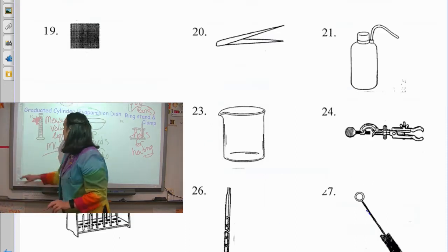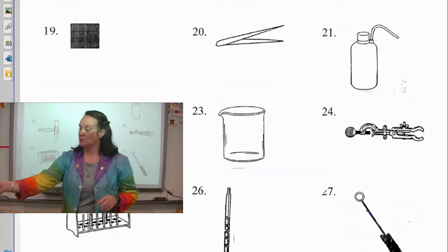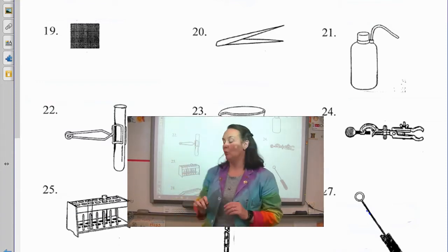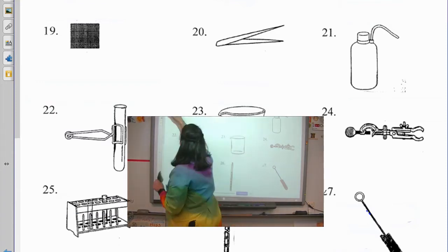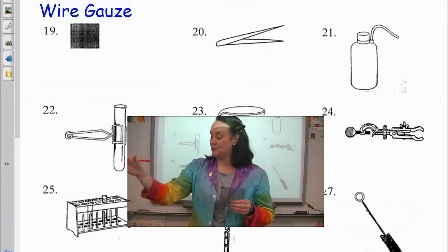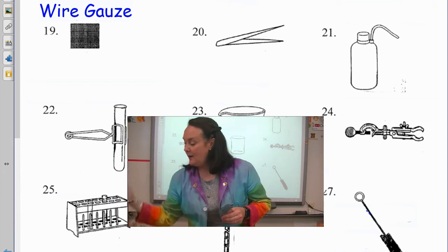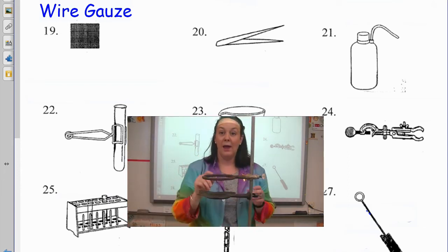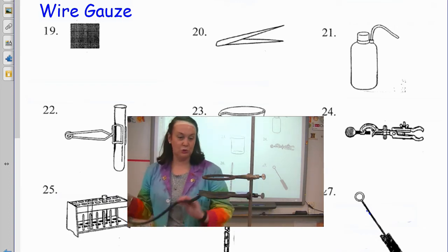All right, on to the back. Number 19 is what we were just talking about. Looks a little bit like this. It's actually called a wire gauze. I like to put wire gauze on things because people think that it just supports during heating, but it actually has a very important use.